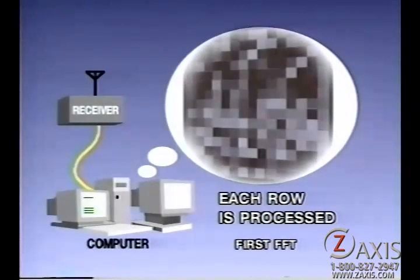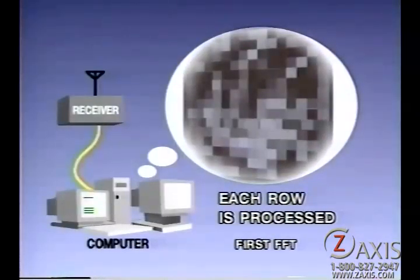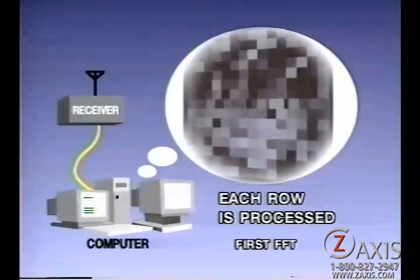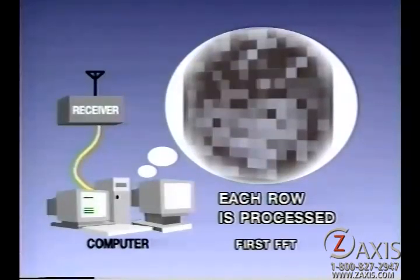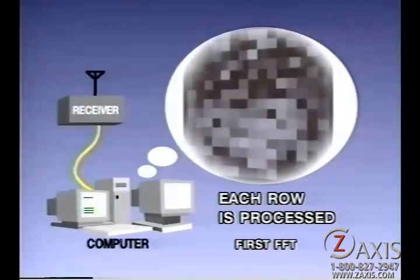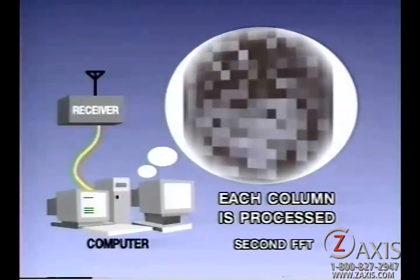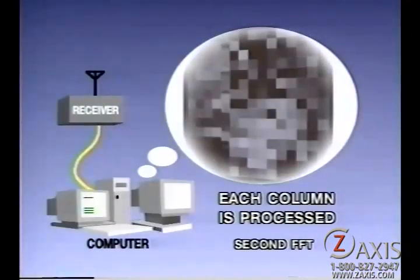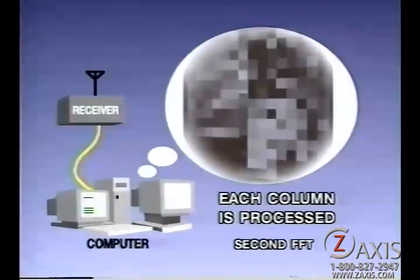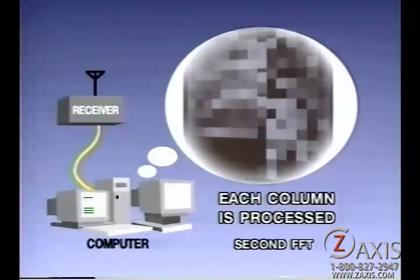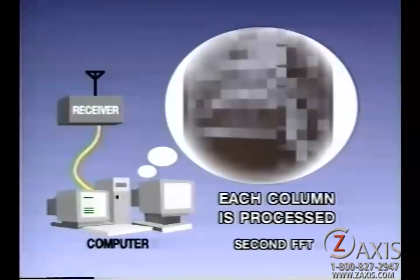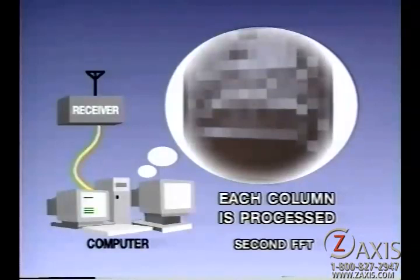First, the computer processes each row of pixels using a mathematical algorithm called a fast Fourier transform, or FFT, to arrange the blocks in the correct horizontal position. This makes use of the phase information that was applied to the protons with the first magnetic gradient. Then, the computer processes each column of pixels using another FFT pass to arrange them in the correct vertical position. This makes use of the frequency information that was applied to the protons with the second magnetic gradient.